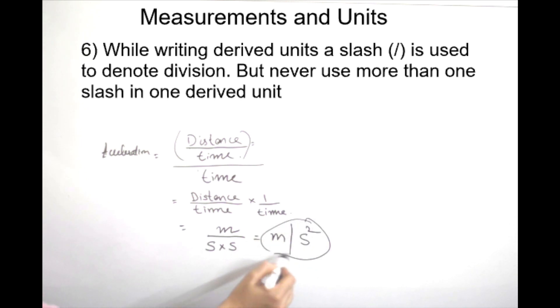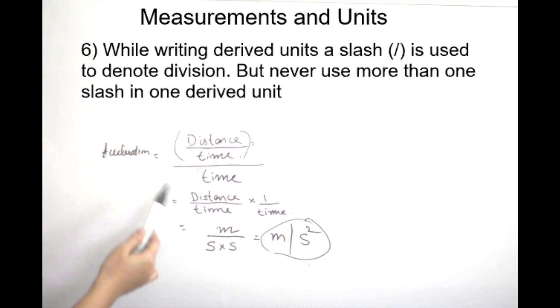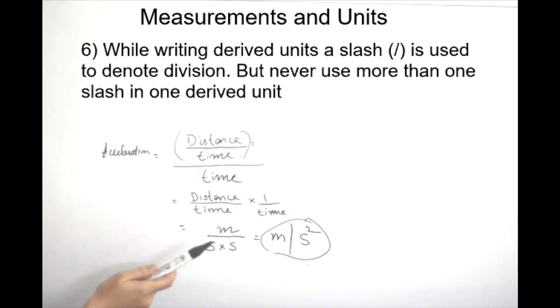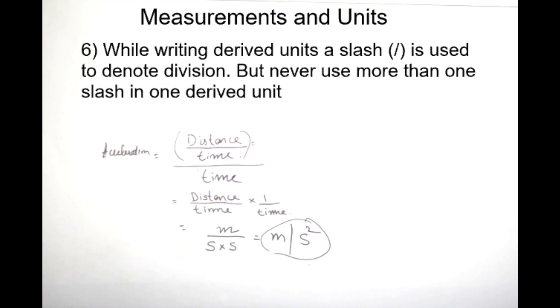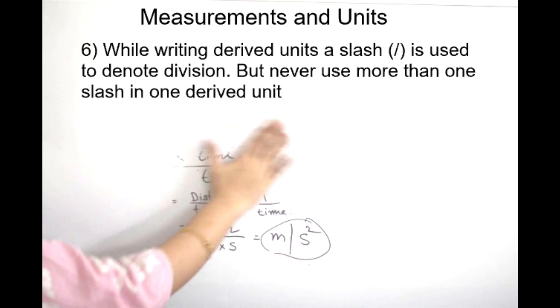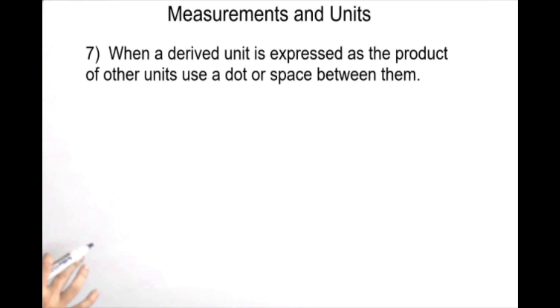So that involves two divisions and three divisions simplified into one. When we solve it, we can multiply the derived units. This is the 6th rule. This is the 7th rule — we can multiply the derived units.